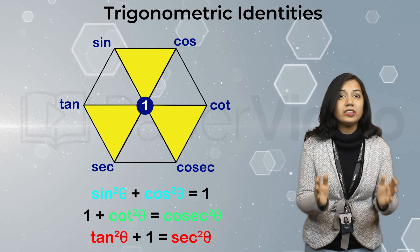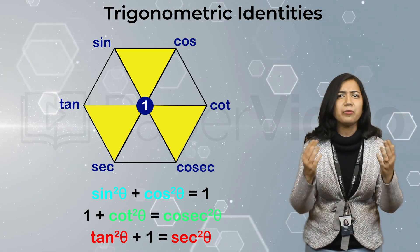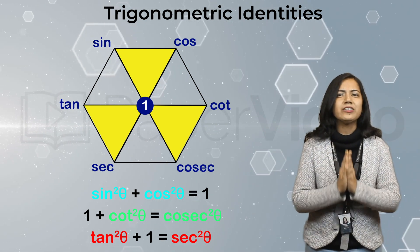These are the three important trigonometric identities that helps us in solving and proving various trigonometric statements.